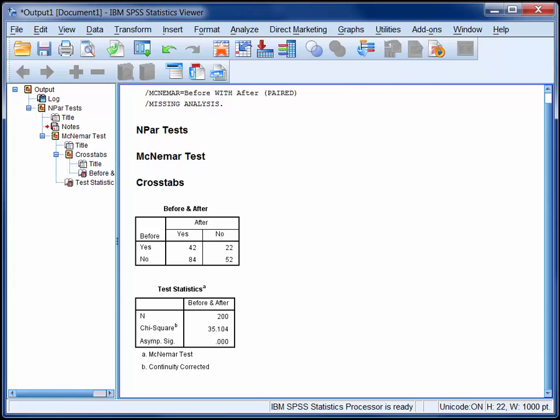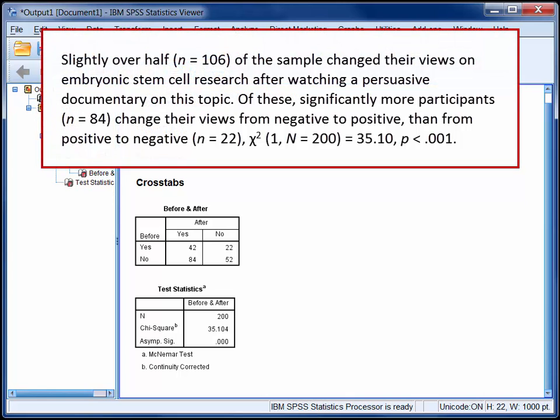You could report the findings like this: Slightly over half of the sample changed their views on embryonic stem cell research after watching a persuasive documentary on this topic. Of these, significantly more participants changed their views from negative to positive than from positive to negative.